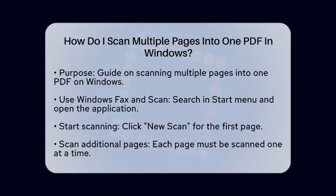First, you can use the built-in Windows Fax and Scan application. To start, search for Windows Fax and Scan in the Start menu and open it. Click on the New Scan button to begin scanning your first page.